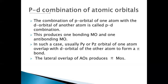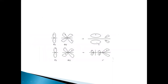The P orbital of one atom combines with the D orbital of another atom — that is called a PD combination. When we look at the picture, we can understand it. The P orbital of one atom combines with the D orbital of another atom, that is DXY. This DXY orbital has its lobes oriented in between the X and Y axes.